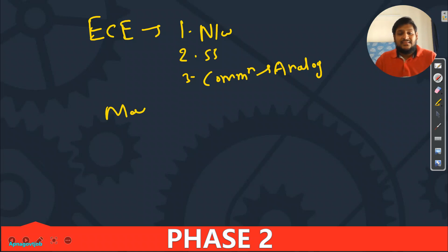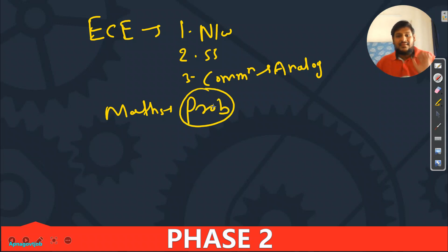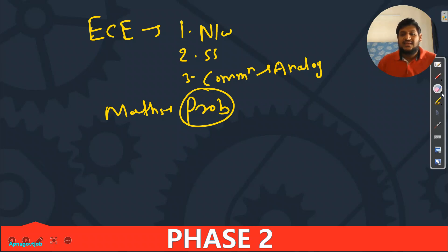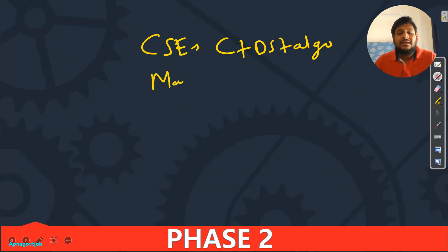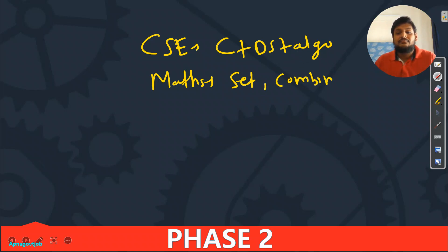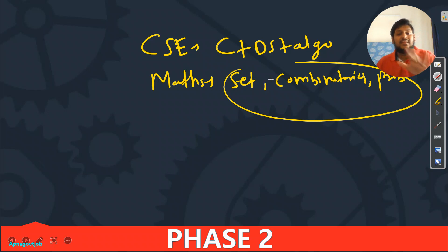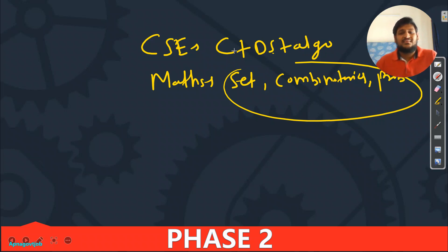In mathematics, I told you to complete Set Theory, Combinatorics, and Probability & Statistics — these three chapters. For CSE, I consider DS, CDS, and ALGO as one combined subject because all the things are connected.